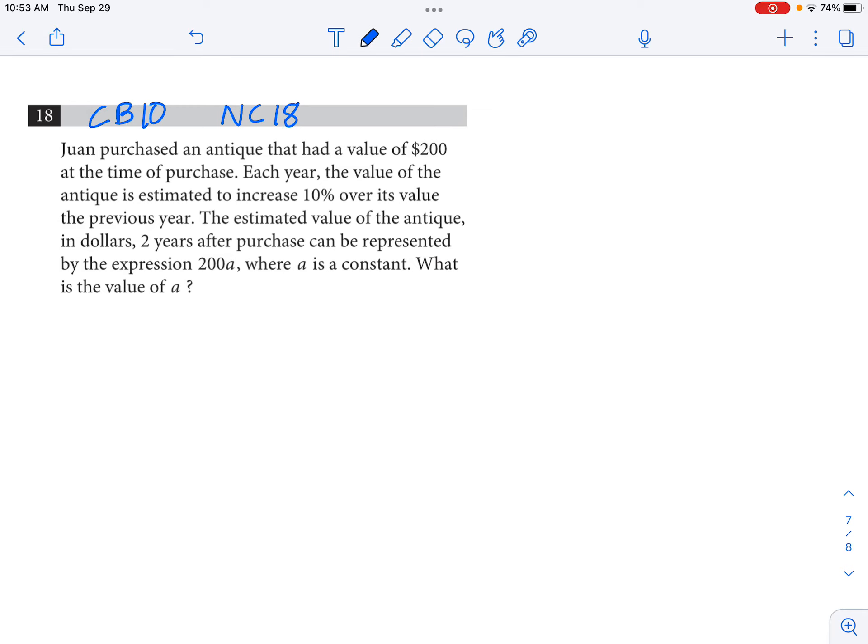College Board 10, no calculator number 18. In this scenario, Juan purchased an antique that had a value of $200 at the time of purchase.